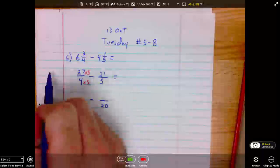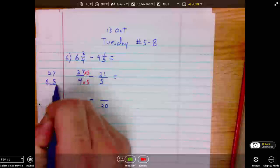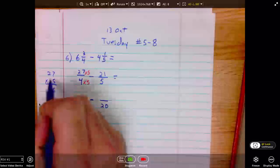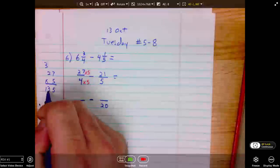Coming off to the side for some scratch paper. 27 times 5. 5 times 7 is 35. Carry the 3. 5 times 2 is 10. Plus 3 is 13. 135.